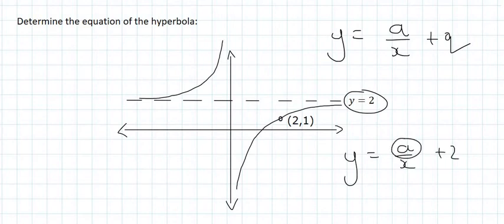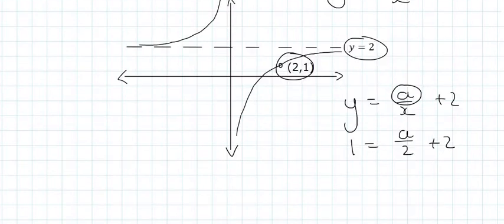We only have one more letter to find, so we substitute that point that I've just circled. The y value there is 1, and the x value is 2. To solve this, we can take this 2 over, so that's going to give us 1 minus 2 which is equal to a over 2. On the left hand side we have 1 minus 2, which is minus 1.